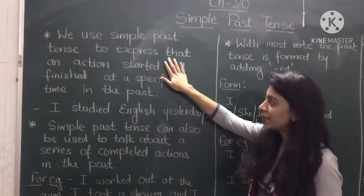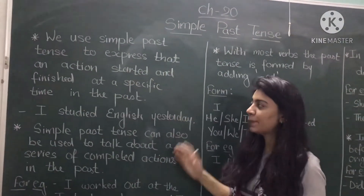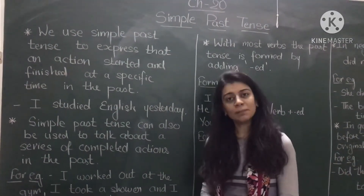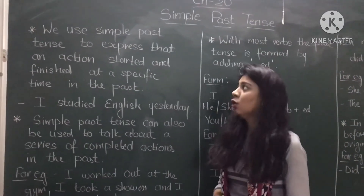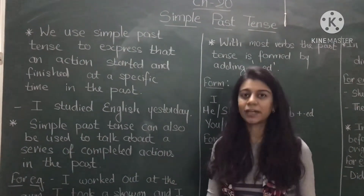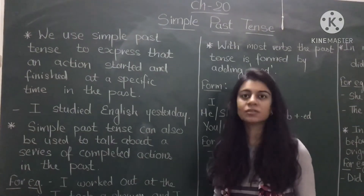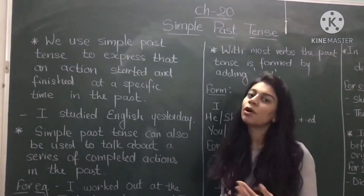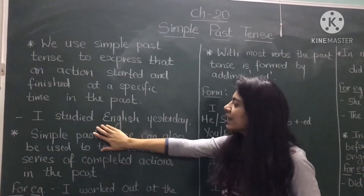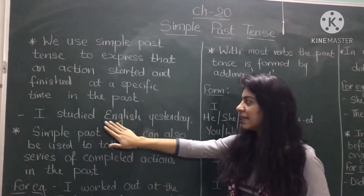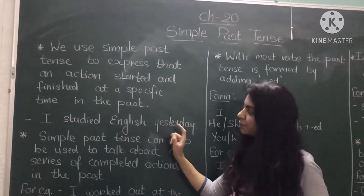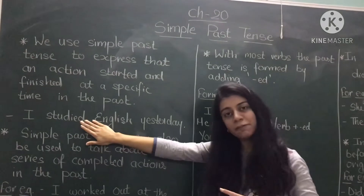We use simple past tense to express that an action started and finished at a specific time in the past. It says that we use simple past tense when we need to express that an activity or an action just started and it also finished at a specific time in the past. It may mean recent past or long duration, but it just started and it got finished. For example, 'I studied English yesterday' — it shows an action that started and finished in the past.